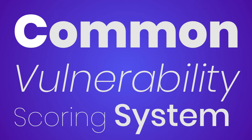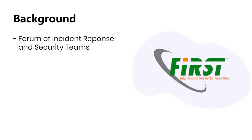The first version of the Common Vulnerability Scoring System, or CVSS, was created in 2005 with the goal of providing an open standard for rating the severity of vulnerabilities. Led by the Forum of Incident Response and Security Teams, or FIRST, the second version of CVSS was released in 2007.